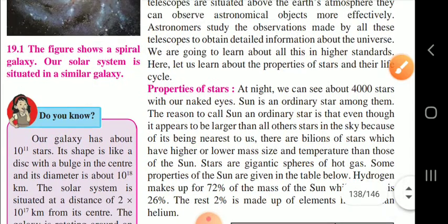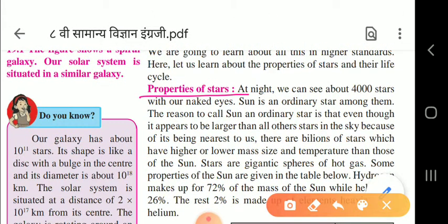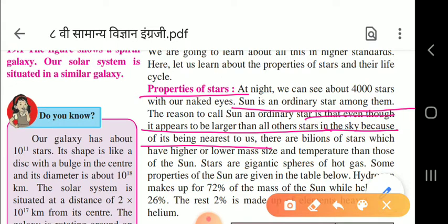Now we will see the properties of stars. At night we can see about four thousand stars with our naked eye. The sun is an ordinary star among them. Even though it appears larger than other stars, it is because it is nearest to us. There are billions of stars with higher mass, size, and temperature than the sun.